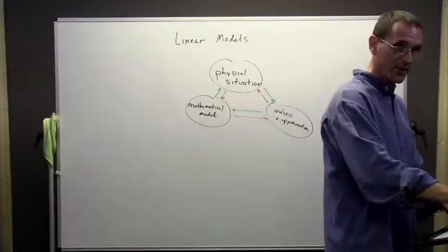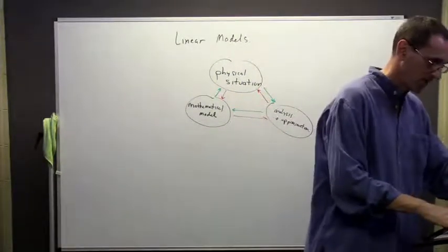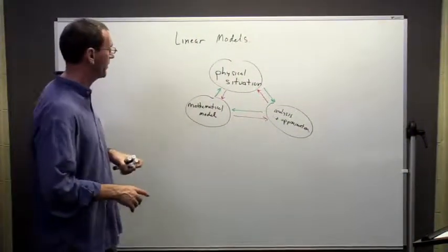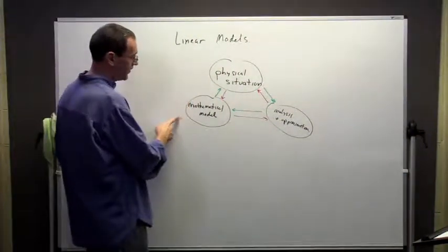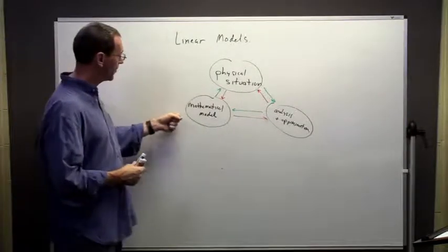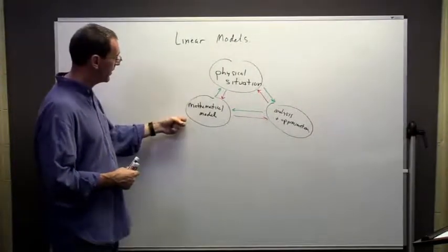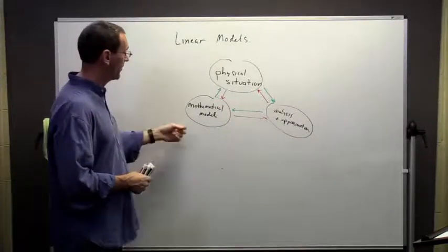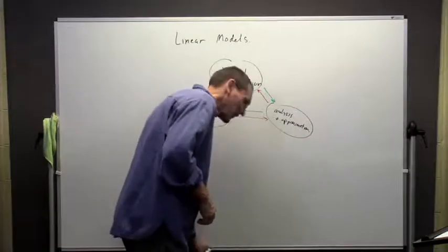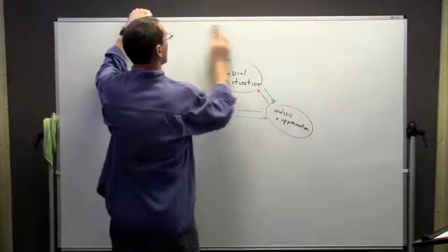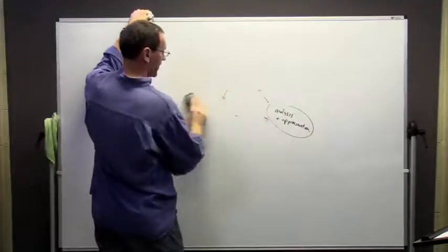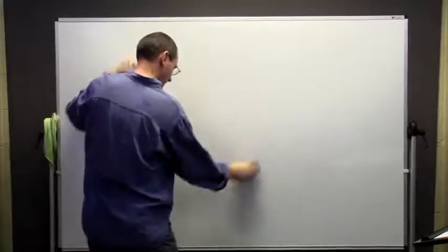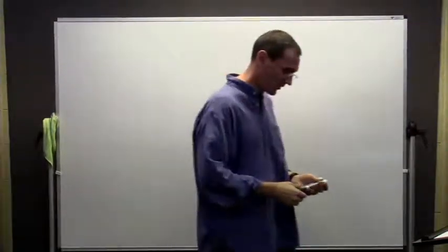One of the things that confuses students is when we have a written description of some physical situation. We're going to talk about the methods and approach we use to go from that description to set up and get this initial estimation of what's going on. There are a number of steps, and the key thing to recognize is it's not magic — it takes some work and you rarely get it right the first time.